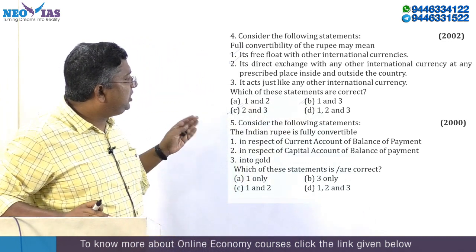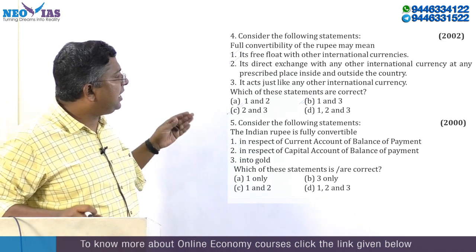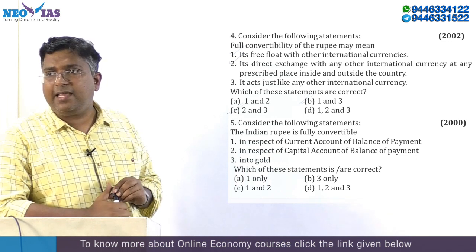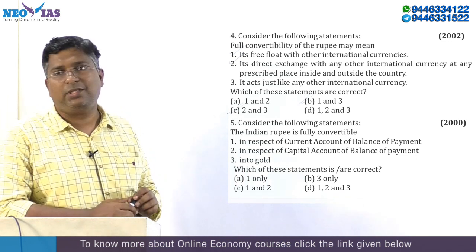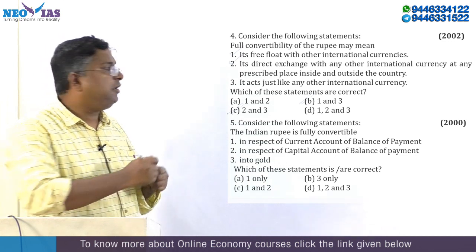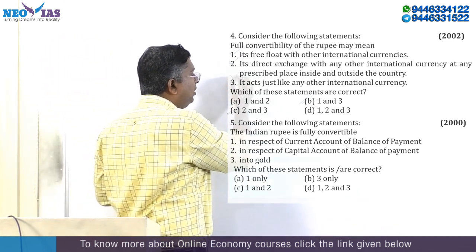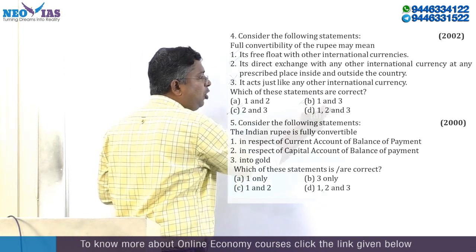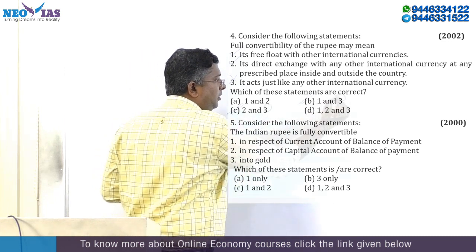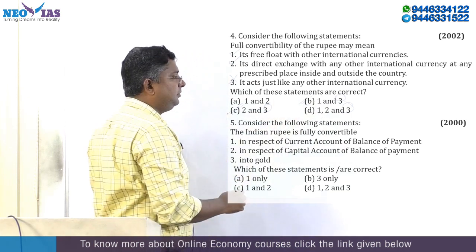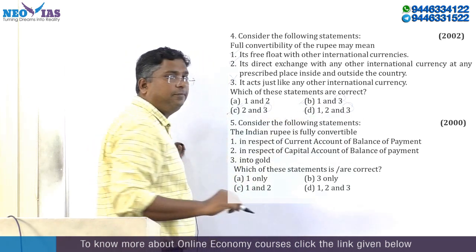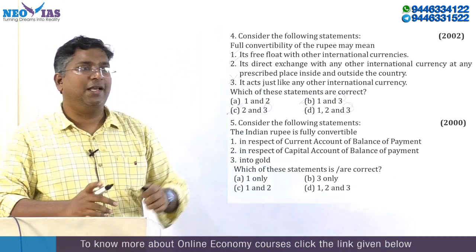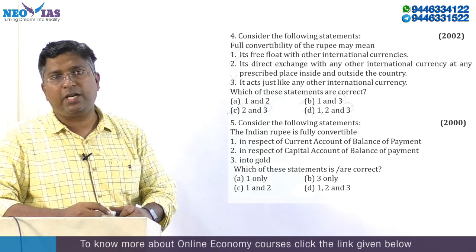Third statement says it acts just like any other international currency. If the Indian rupee becomes fully convertible, will it act like an international currency like the US dollar? No. Third statement is wrong. If third statement is wrong, you can eliminate B, C, and D — three is common. Sometimes you have to read from back, starting with the fourth statement instead of the first. You have to do all these experiments when you write the test series.